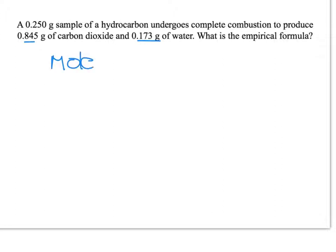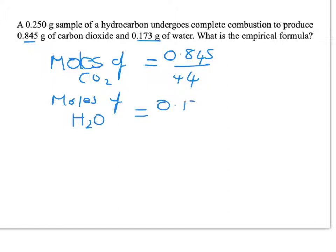So let's do moles of carbon dioxide first of all. That's going to equal 0.845 divided by the molar mass of carbon dioxide which is 44. And moles of H2O is going to be 0.173 divided by 18. So if you pop those in your calculator, let's just see what we get.